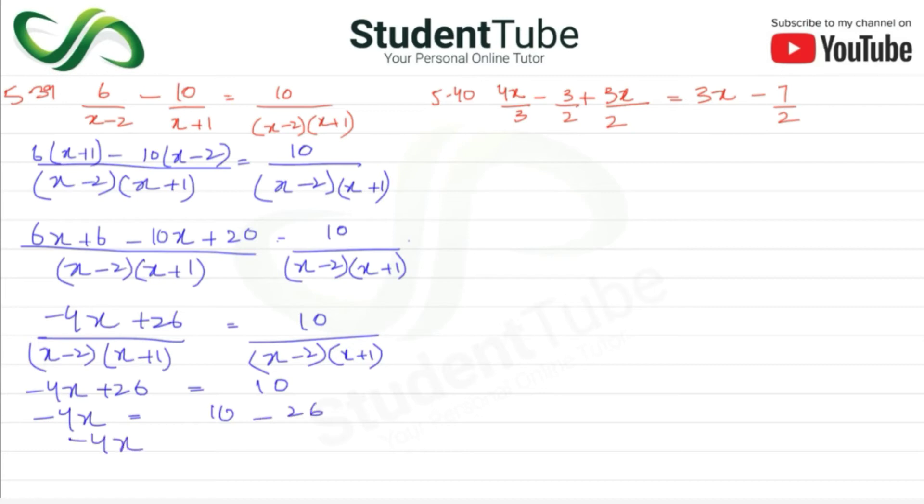So minus 4x is equal to 10 minus 26, which gives minus 16. Minus minus cancel, so x is equal to 16 upon 4. 4 into 4 is 16, so x is equal to 4.